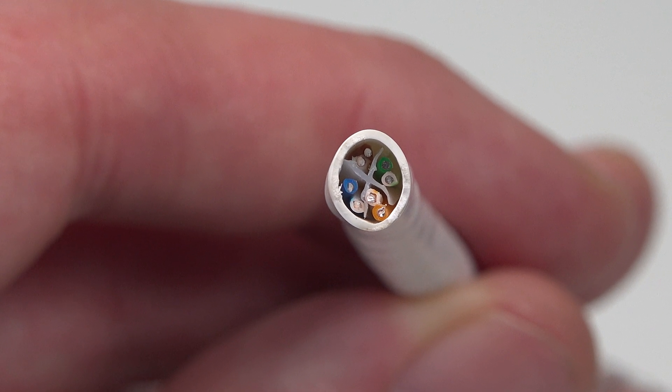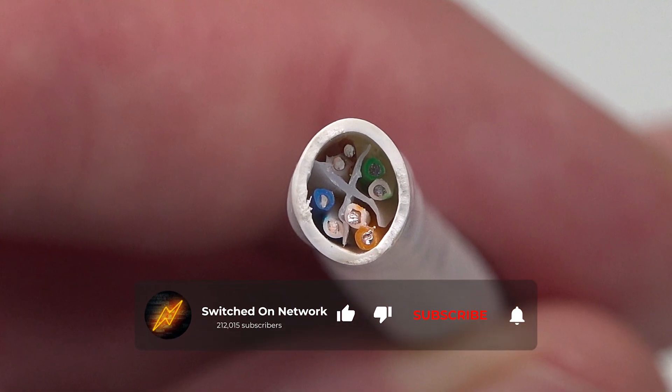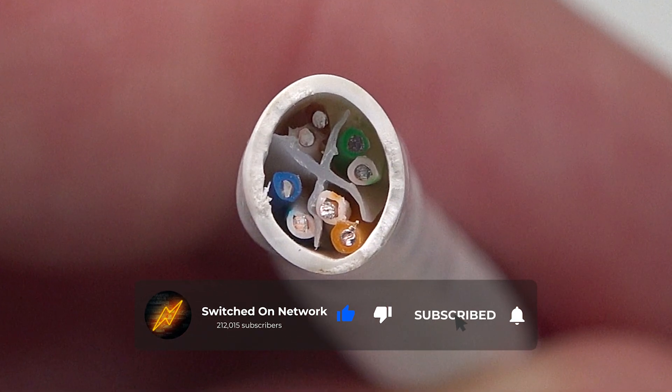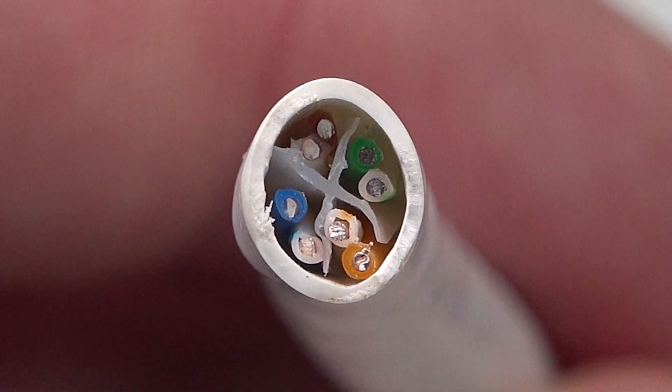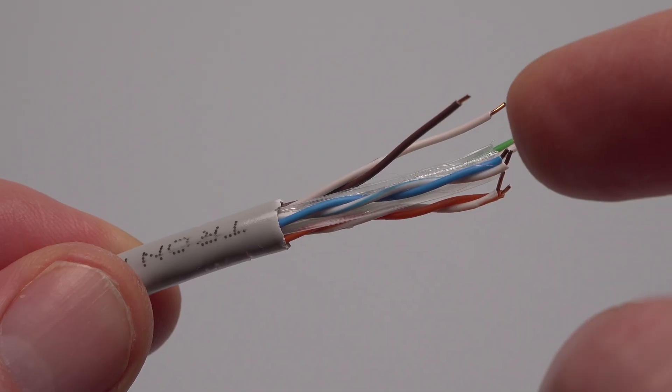Network cable consists of four twisted pairs of wire so eight wires in total. Cat6 cable usually also has a loose plastic core running down the center to reduce crosstalk between those four twisted pairs.